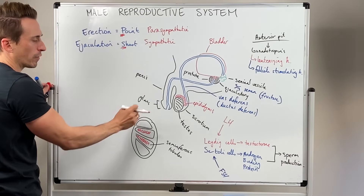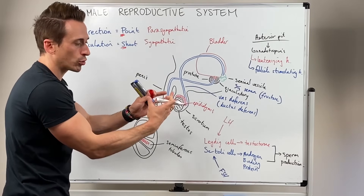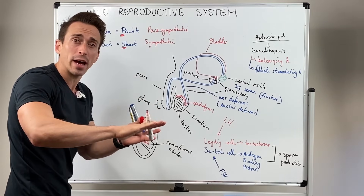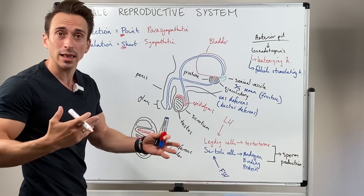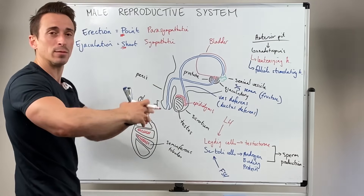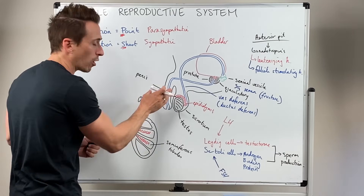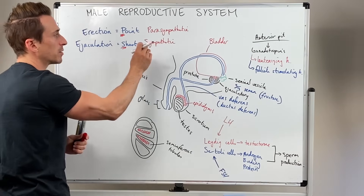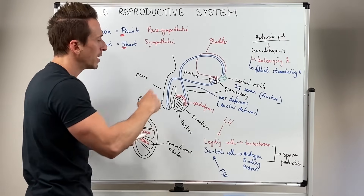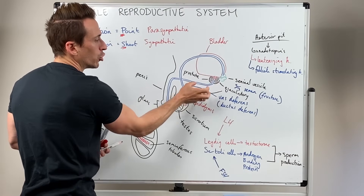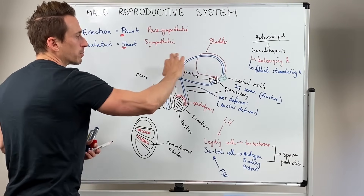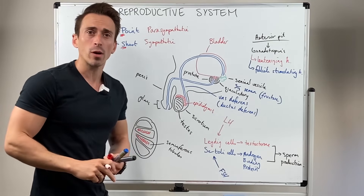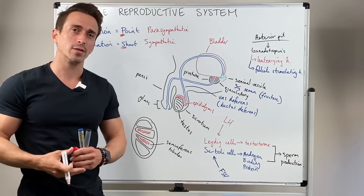The parasympathetic nervous system tells the blood vessels to dilate. Blood enters the penis and compresses the veins so blood can't leave — erection is blood filling the spongiform tissue of the penis. Ejaculation is triggered by the sympathetic nervous system, stimulating the smooth muscle of the tube to contract and push the sperm and semen through. This concludes our overview of the male reproductive system.